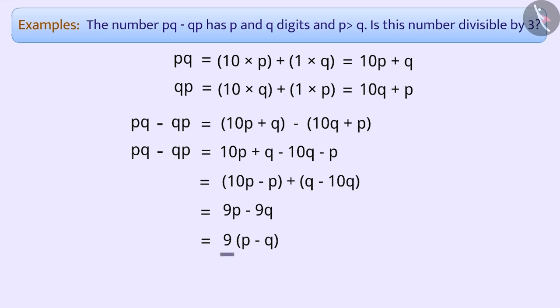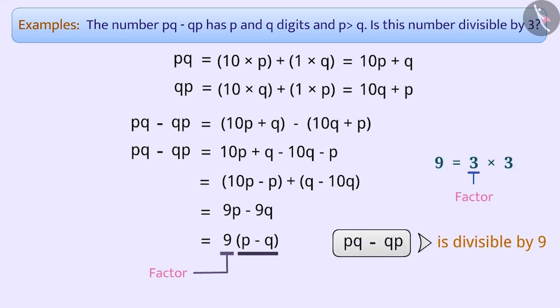Since this number p - q is multiplied by 9, we can say that this number is a multiple of 9. That is, 9 is a factor of pq - qp. That is, pq - qp is divisible by 9. And since 3 is a factor of 9, this number will also be divisible by 3.